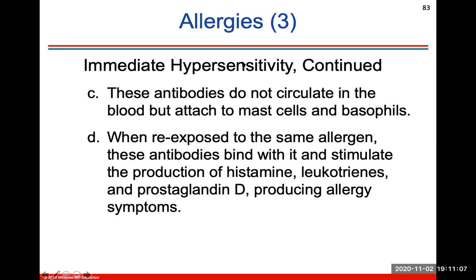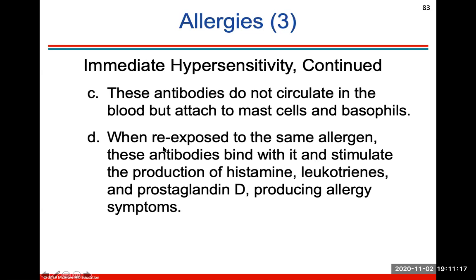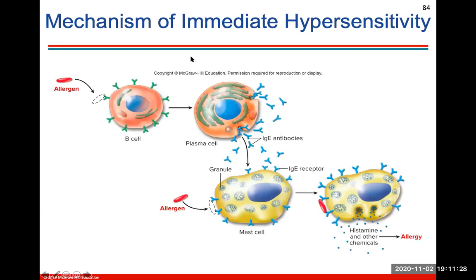Immediate hypersensitivity continued: these IgE antibodies do not circulate in the blood but attach to mast cells and basophils. When re-exposed to the same allergen, these antibodies will bind with it and stimulate the production of histamine, leukotrienes, and prostaglandin D, which produce your basic allergy symptoms. This is the mechanism of immediate hypersensitivity and how the allergen is bound to these antibodies and becomes an allergy.